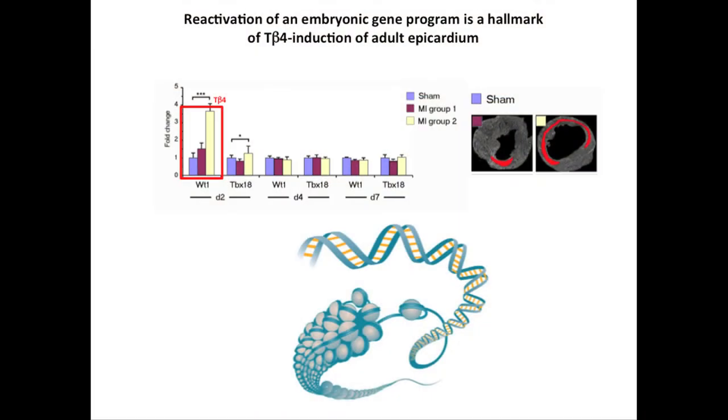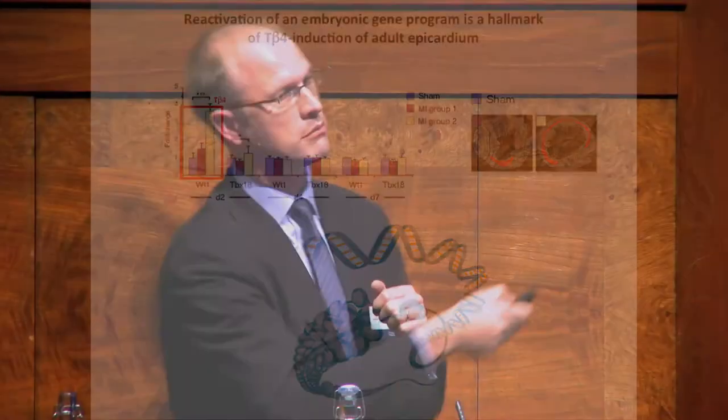How does it do it? It's an epigenetic mechanism — altering the DNA without changing the underlying sequence. Thymosin beta-4 interacts directly with chromatin remodelling complexes that open up densely packaged DNA to make it accessible for key factors to bind and activate these genes, specifically at the gene called Wilms tumor 1, which is a really important gene for driving activation of these epicardial cells. Mechanistically we're now starting to understand the processes that can reactivate adult epicardial cells.